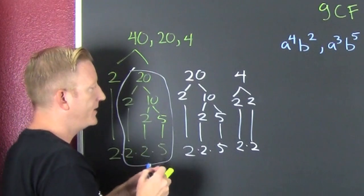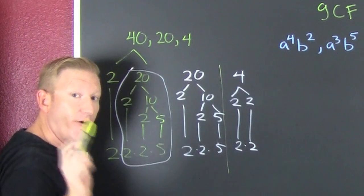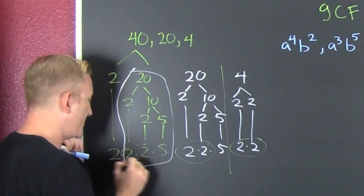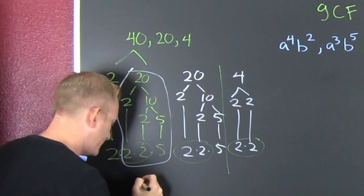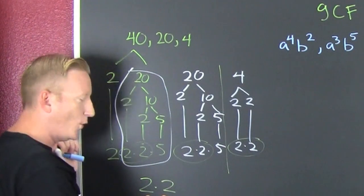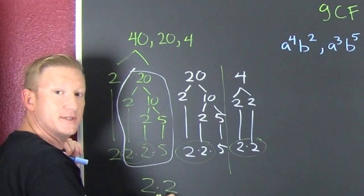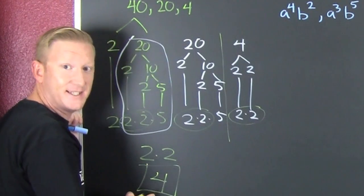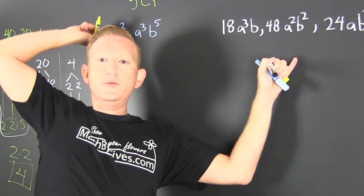Now, for the greatest common factor we're looking for all the factors in common. This one has two twos, this one has two twos, this one has two twos — what does a ballerina wear? Two-twos! The greatest common factor of 40, 20, and 4 is two times two, or four — the Fantastic Four!